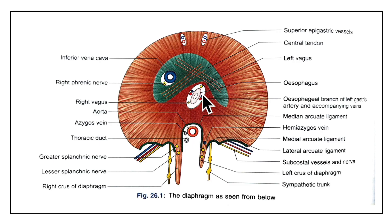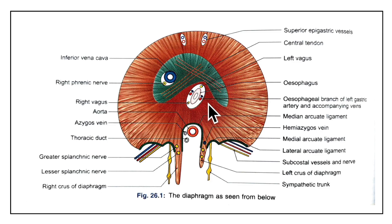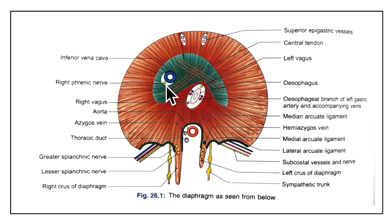The esophageal opening lies in the muscular part of the diaphragm at the level of the 10th thoracic vertebra. It transmits the esophagus, the gastric or vagus nerve, the esophageal branches of the left gastric artery, and the accompanying veins. The vena caval opening lies in the central tendon of the diaphragm at the level of the 8th thoracic vertebra. It transmits the inferior vena cava, the branches of the right phrenic nerve, and the lymphatics of the liver.